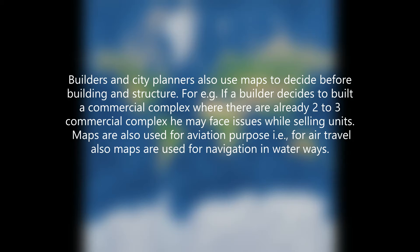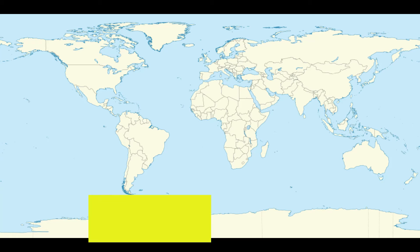In a physical map, colors are used to represent different features of the Earth. Plains and lowlands are shown in green. High mountains are represented in dark brown, while lower mountains are shown in light brown. Deep water is shown in dark blue shades, while shallow waters are represented in light blue color.